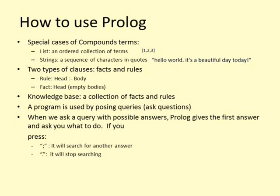Prolog programs describe relations defined by clauses. There are two types of clauses: facts and rules. A rule has the form: head :- body. This is read as 'head is true if body is true.' Clauses with empty bodies are called facts.